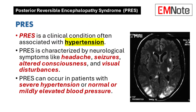Posterior Reversible Encephalopathy Syndrome, PRES, is a clinical condition frequently associated with hypertension, characterized by a range of neurological symptoms including headache, seizures, altered consciousness, and visual disturbances. While PRES predominantly occurs in patients with severe hypertension, it can also manifest in individuals with normal or mildly elevated blood pressure levels.